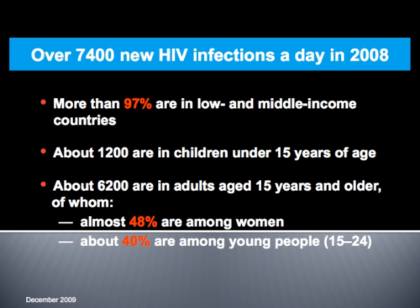As of 2008, we have 33.4 million adults in the world with HIV. Interestingly, out of those 33 million, 30 million are in Africa. Some countries have statistics so high that one-third of the whole country has AIDS. You can imagine the spread and the intensity of HIV.